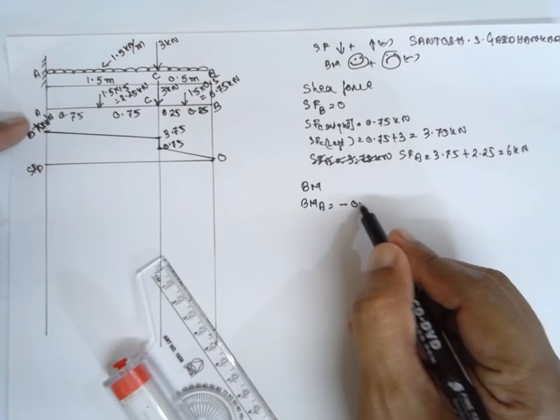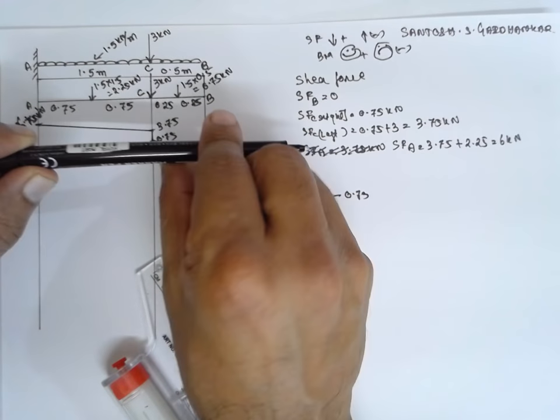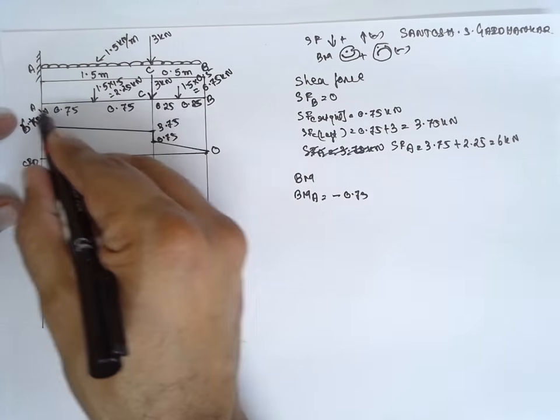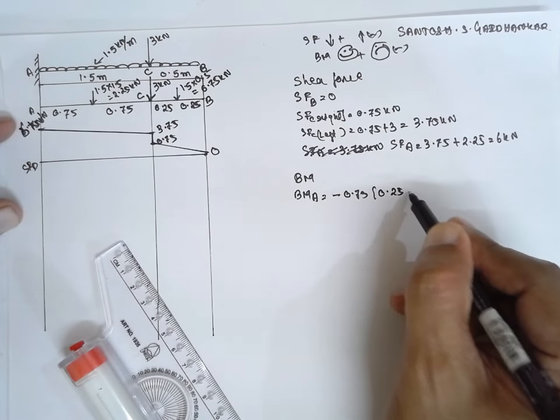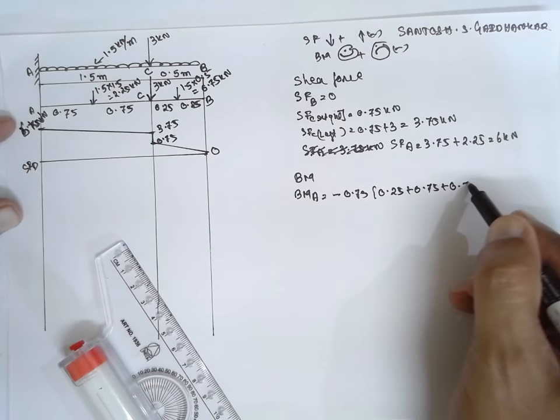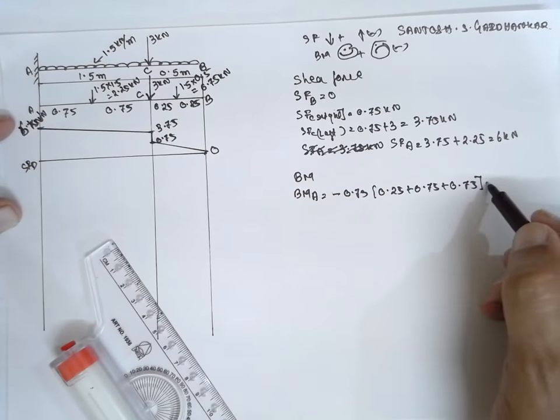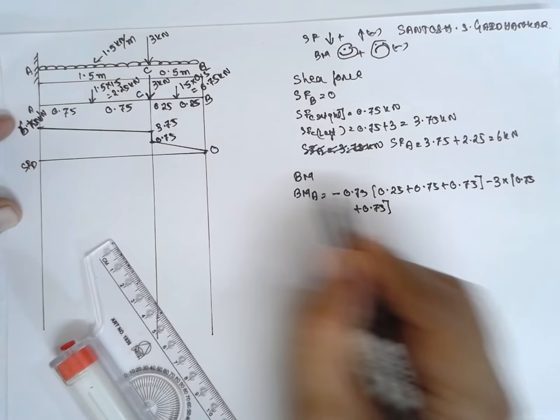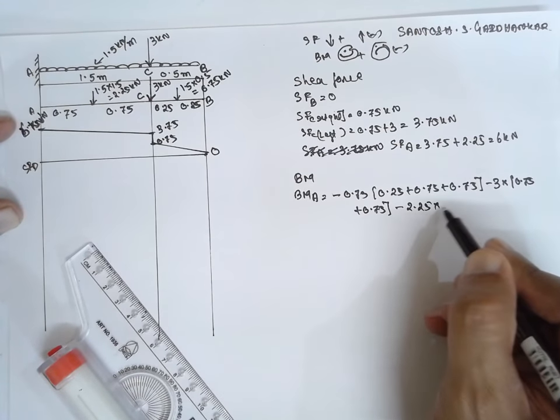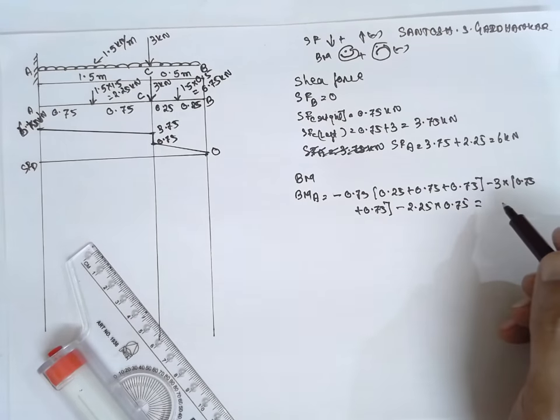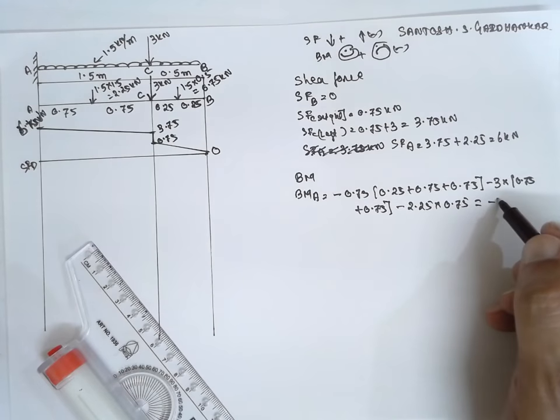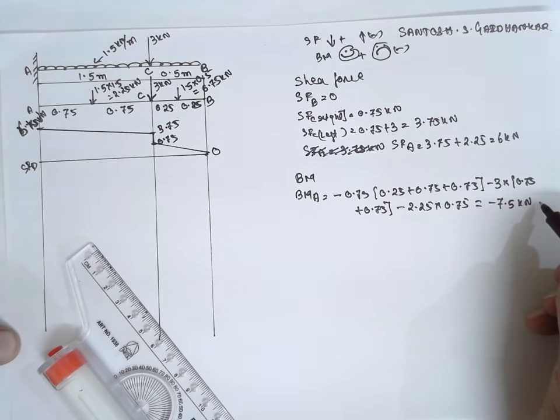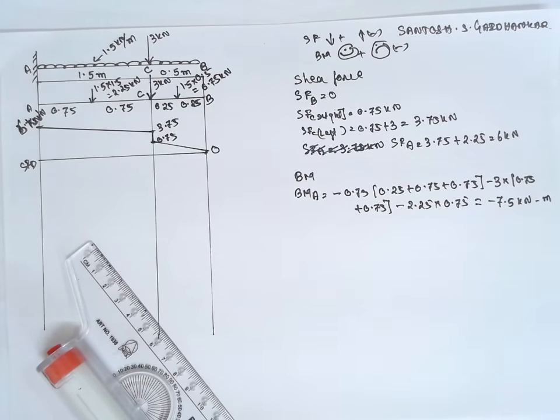I will refer this diagram here. The first load is minus 0.75. Why it is minus? It is sad face, it is bending in this way. Therefore, it is sad, therefore I have considered negative. 0.75 into distance into 0.25 plus 0.75 plus 0.75. Next, this load minus 3 into 0.75 plus 0.75 into this load minus 2.25 into 0.75. If you calculate, the answer for this one is minus 7.5 kilonewton meter.